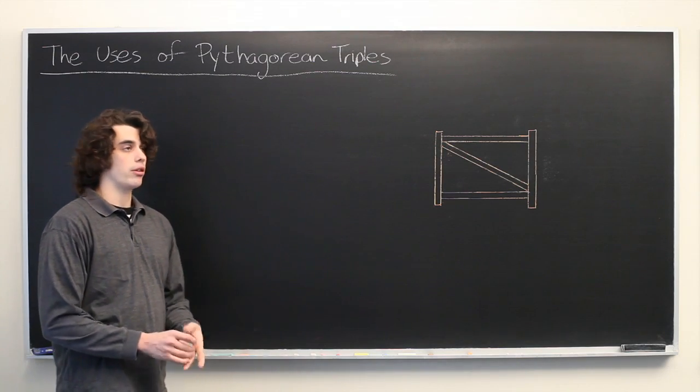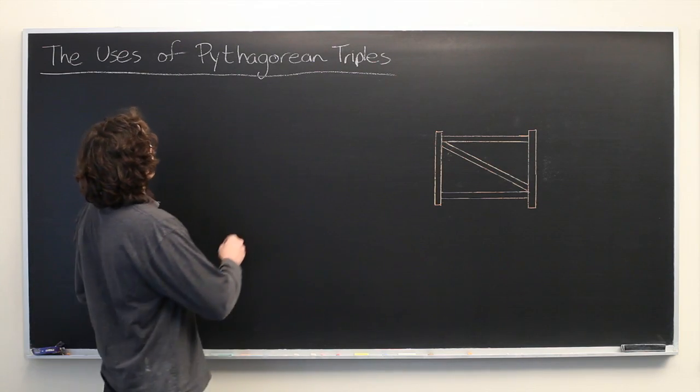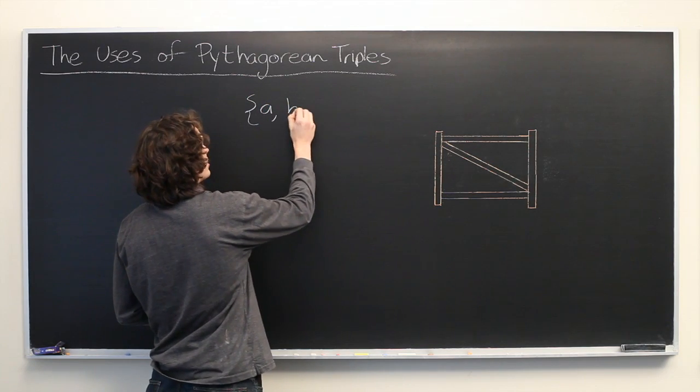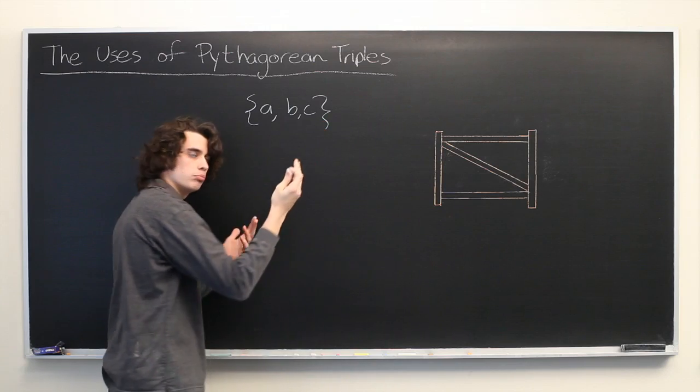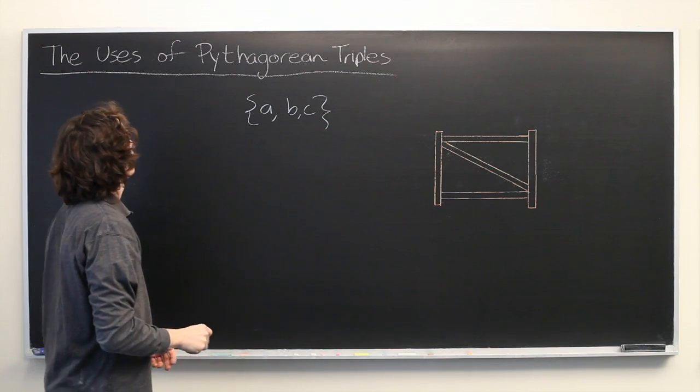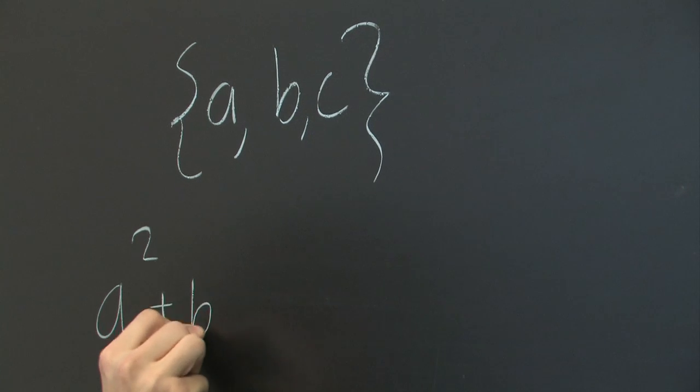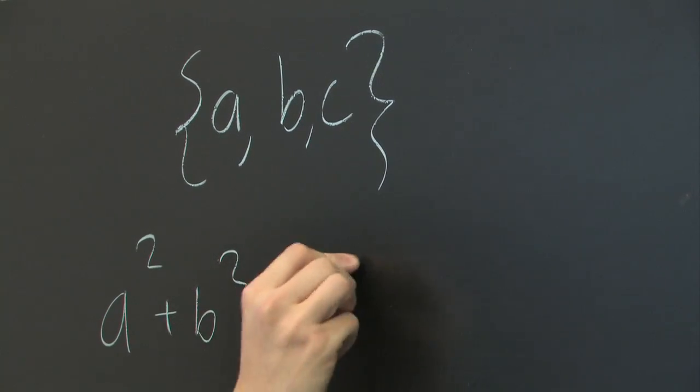As a brief reminder, a Pythagorean triple is a set of integers, we'll call them a, b, and c, though really you could call them any letters you want, such that a squared plus b squared equals c squared.